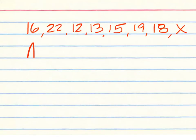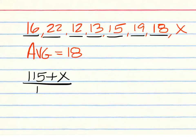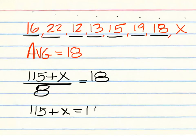In this problem, we have 16, 22, 12, 13, 15, 19, 18, and X. We want the average to come out to be 18. So, that's 115 plus X. And divide by 1, 2, 3, 4, 5, 6, 7, 8. We want the average to be 18. So, that's 115 plus X equals 144. So, that should be 29.